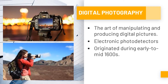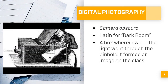The technique in photography originated during the early to mid-1600s. It started from the camera's predecessor known as the Camera Obscura — from the Latin meaning dark room. Camera Obscura is a box wherein when light went through the pinhole, it formed an image on the glass. The famous Renaissance artists who used the Camera Obscura were Leonardo da Vinci and Michelangelo.